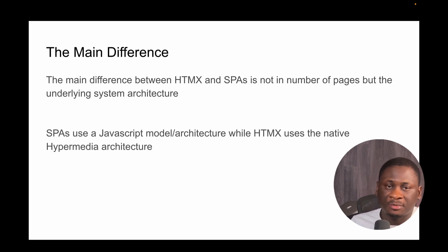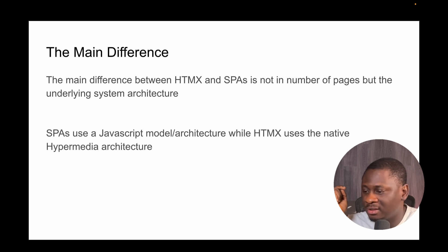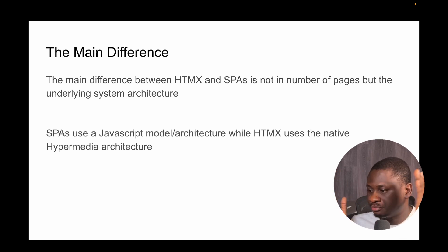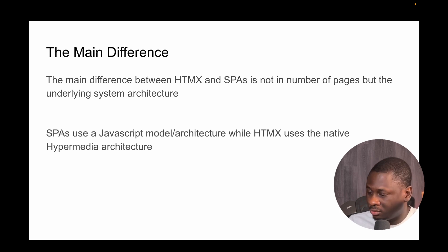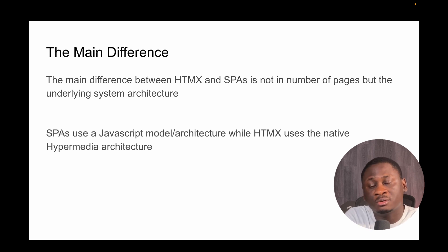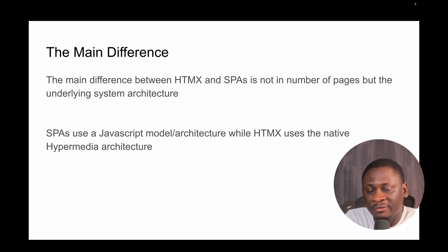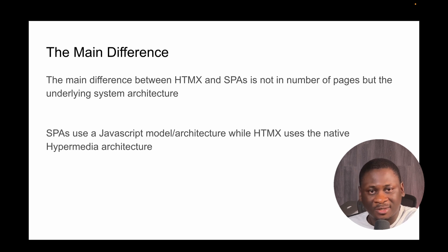SPAs use the JavaScript model architecture while HTMX uses the native hypermedia architecture — that is the main difference. In another video I'll be telling you when and when not to use HTMX and when and when not to use single page applications. HTMX is a hypermedia-driven library that helps you use the underlying hypermedia infrastructure to build apps using native web controls while still adding wonderful interactive features, whereas SPAs use JavaScript to run the entire DOM and ditch the hypermedia architecture. Thank you very much — remember to drop a like and subscribe for more HTMX content.